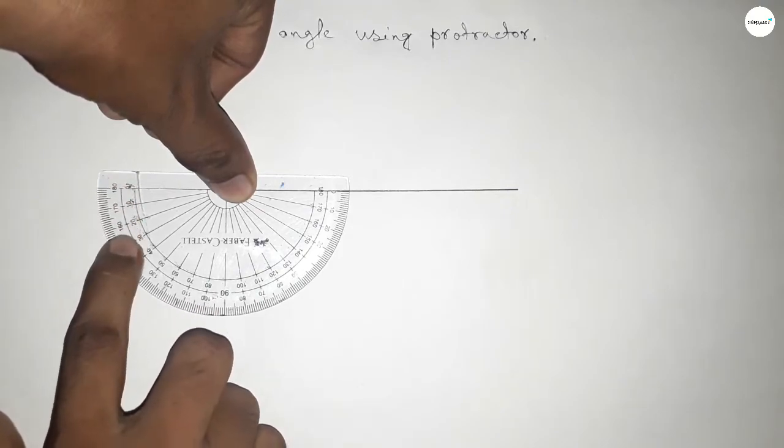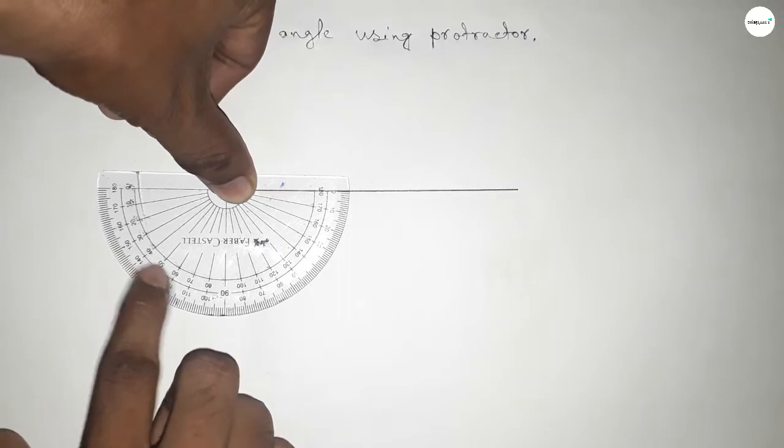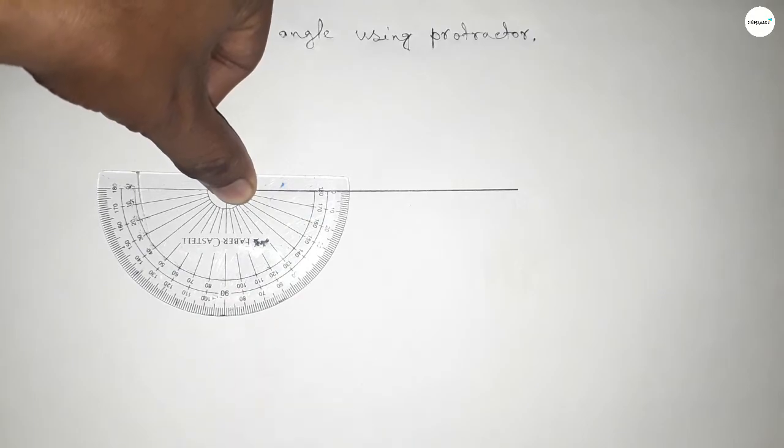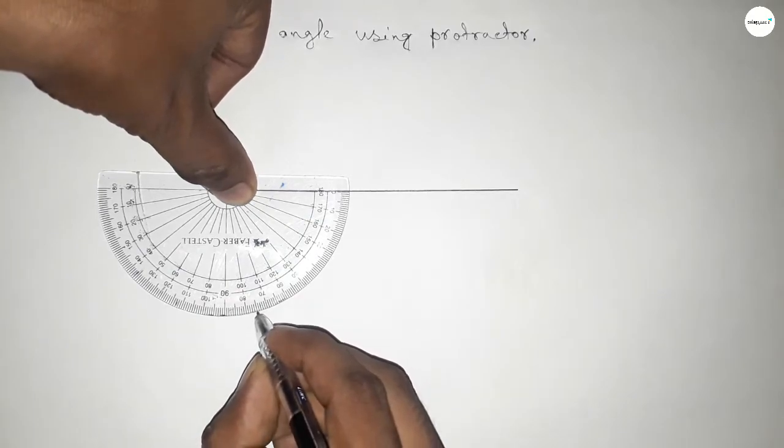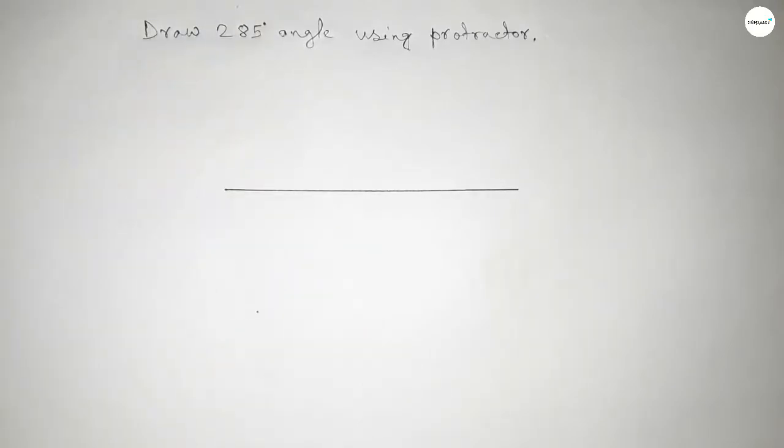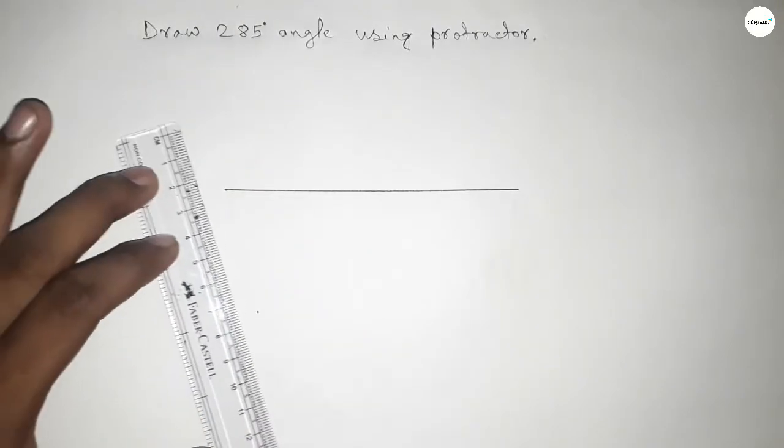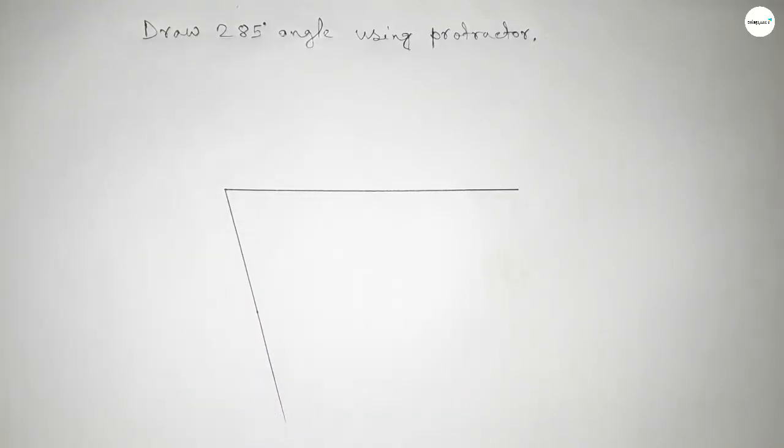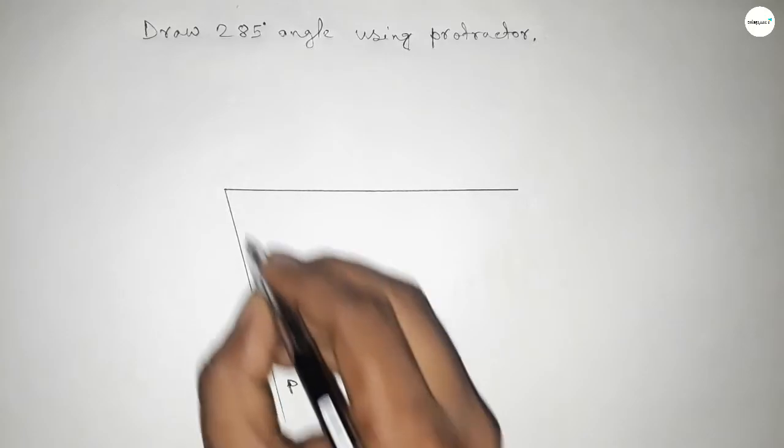Count 105 degrees. So this is 90, 100, and this is 105 degrees. So by adding 105 degrees with 180 degrees, we can get a 285-degree angle. Now joining this, so we got this angle.